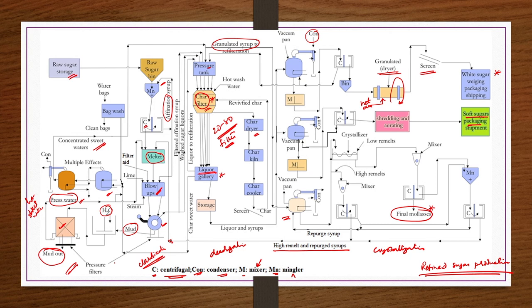The description of the affination process has been covered. The remaining clarification, decoloration, and crystallization steps will now be described in detail.